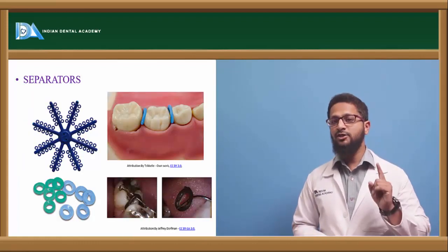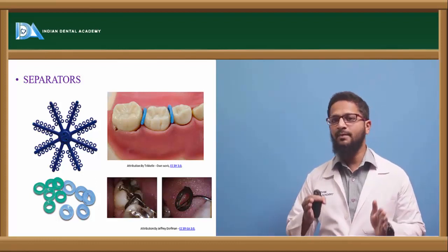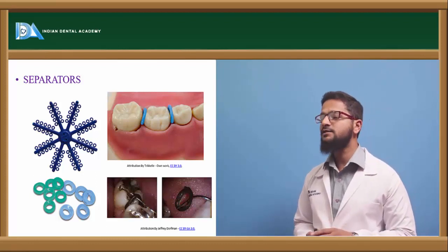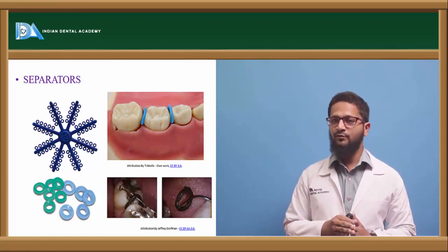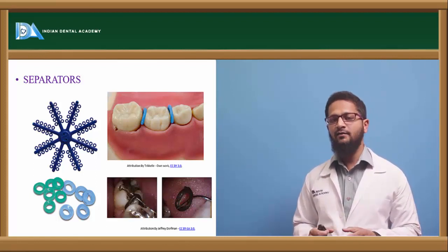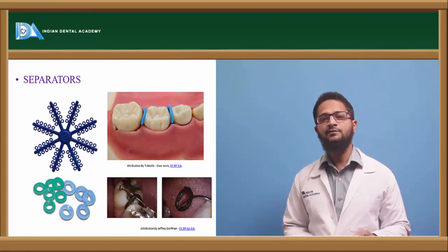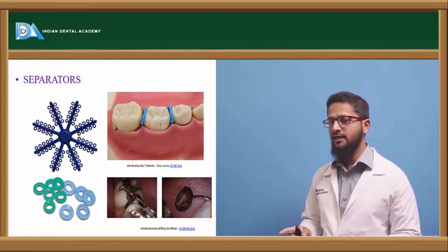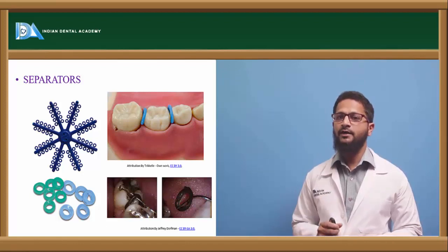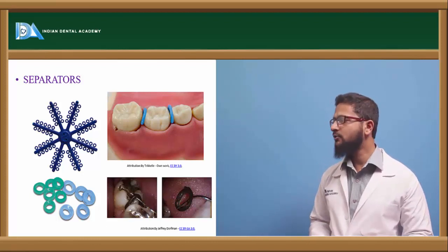As mentioned in the banding procedure, separation of the teeth is required before banding because band material cannot pass between the teeth. Separators can be rubber or metallic. Rubber separators are easily placed, left for 24 hours, and as they try to regain their shape, they open up the interproximal space. The Kesling separator is one of the most commonly used metallic separators; it consists of a helix and two arms — the shorter arm passes below the contact area and the longer arm rests above it. As the two arms try to come together, the space opens up.